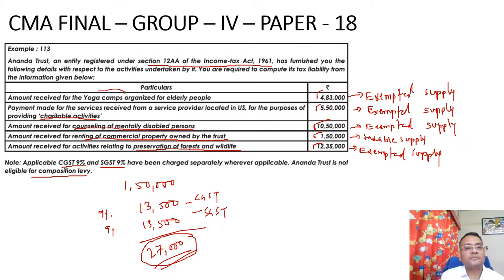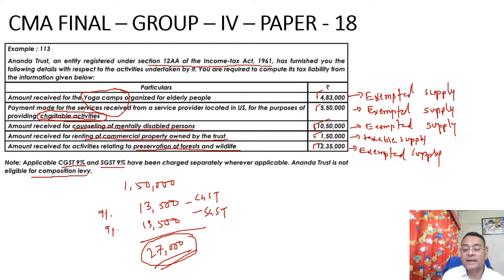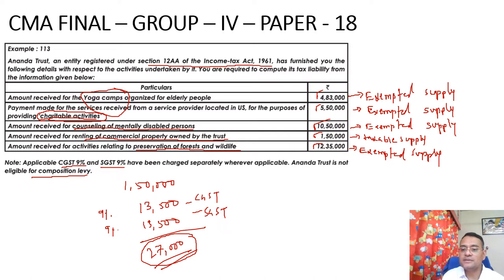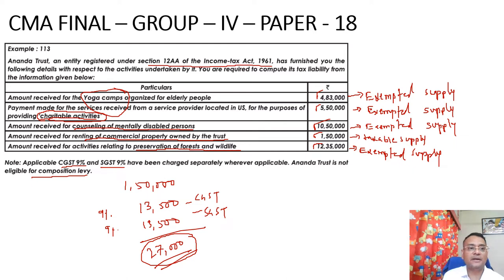Summary: yoga camp activities are exempted; charitable activity payments, whether inside India or outside India, are also exempted under GST; counselling for mentally disabled persons is also exempted under GST; commercial property renting by trust is always subject to GST and is a taxable supply; preservation of forest and wildlife is again an exempted supply under GST.